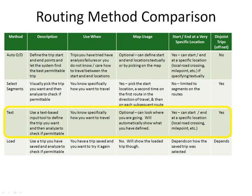Text description is the next option. As with the select segments method, the text option allows you to specify a trip you want to take and then ask the system if it is okay. The trip is defined by using a tool or wizard to help you textually define where you will start, all the routes you will travel on, and where you will end. You do not need to use the map at all, but you can use the map to look around and determine where your next turn may be. The map will also automatically update to show the trip you have selected on each entry, and will show possible start, turn, or ending locations if more than one exists.